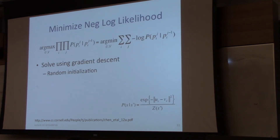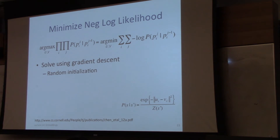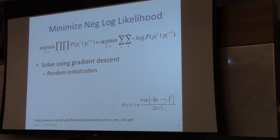The typical way to solve this is to convert the maximization problem into minimizing a sum of negative log-likelihoods. You take a negative log, differentiate with respect to U and V, and compute the gradient. This is a non-convex optimization problem, just like factor models. Initialization is important — typically people do random initialization and then gradient descent or stochastic gradient descent.